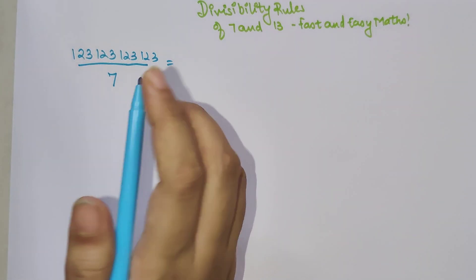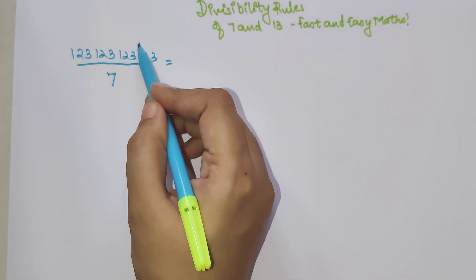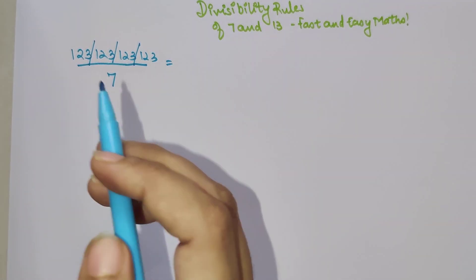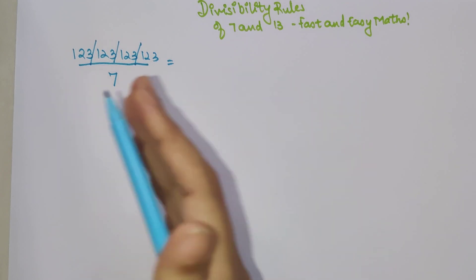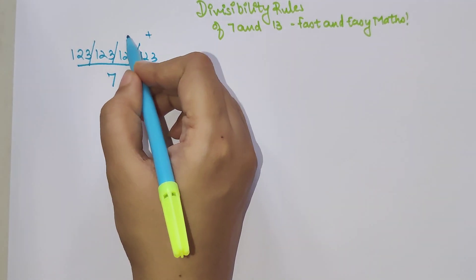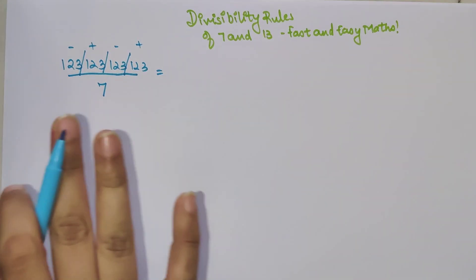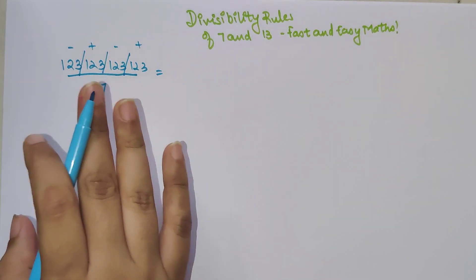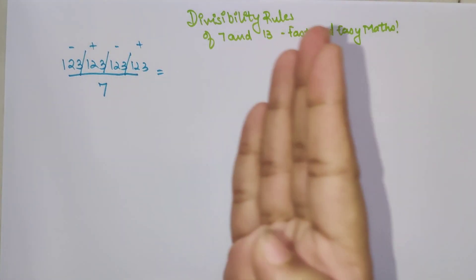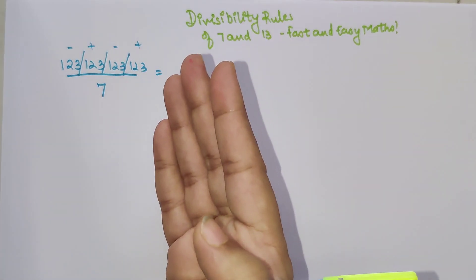The first step is to start clubbing your number in groups of 3, starting from your right. So this is my first group, this is my second group, and this is my third group. Then, starting from your right, you put the signs plus, minus, plus, minus — alternating. This is very important.